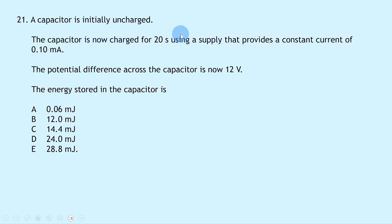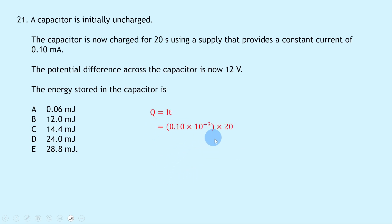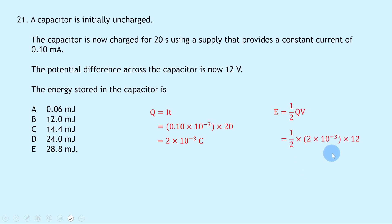Question 21: a capacitor is charged for 20 seconds at a constant current of 0.10 mA, giving a potential difference of 12 V. First find charge: Q = It = 0.10 × 10⁻³ × 20 = 2 × 10⁻³ C. Then use E = ½QV = ½ × 2 × 10⁻³ × 12 = 1.2 × 10⁻² joules, or 12.0 millijoules, which is answer B.